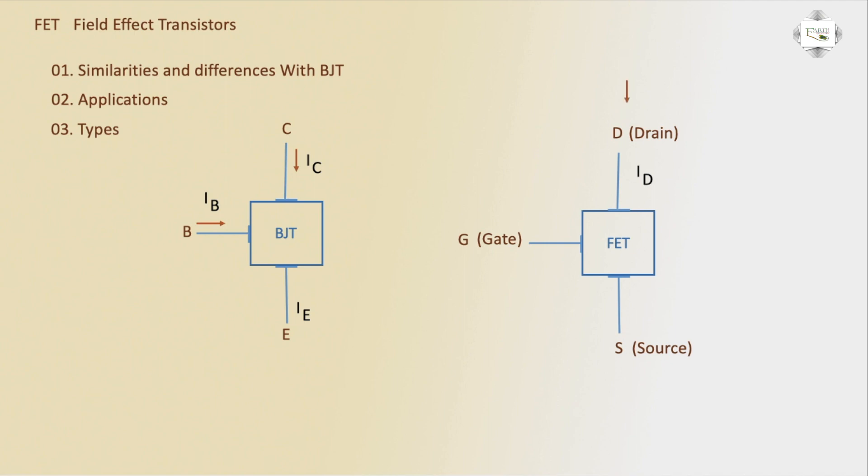Current flows in transistor. VGS is voltage gate to source. IC equals beta times IB. ID is proportional to VGS. ID refers to FET field effect transistor, while BJT means bipolar junction transistor.